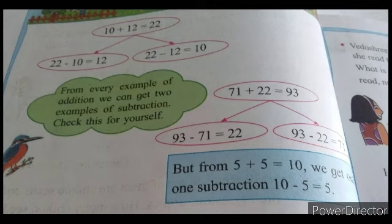Now take the big number again: 22. Cancel from that the number 12 — so 22 minus 12. The answer will come to 10. The remaining number is the answer.